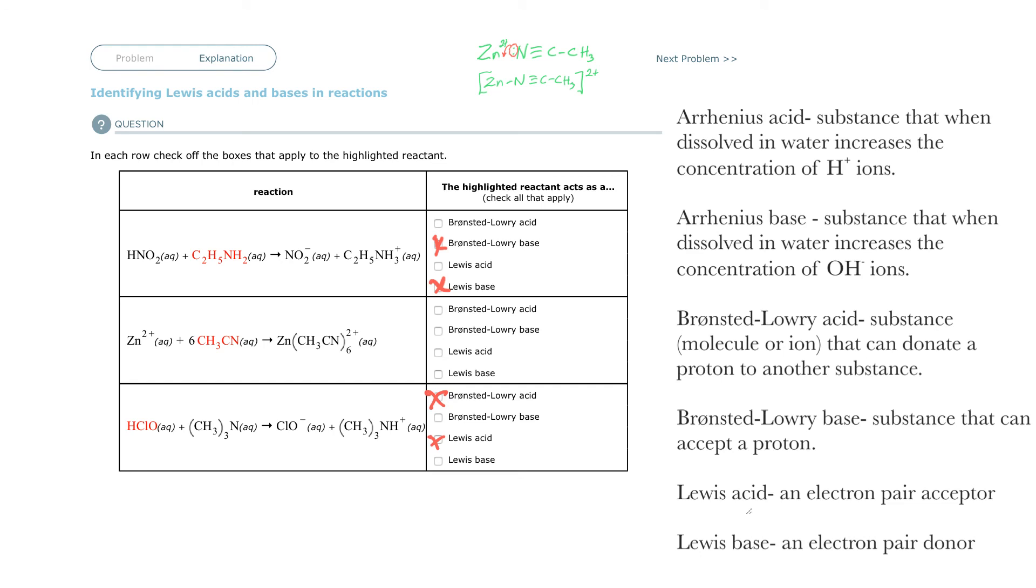So in that case, there's no proton here. So if there's no proton, there's no proton acceptor, so it can't be a Bronsted-Lowry base. But it's still a Lewis base because the Lewis base is providing the electrons for it to use to form a bond with.